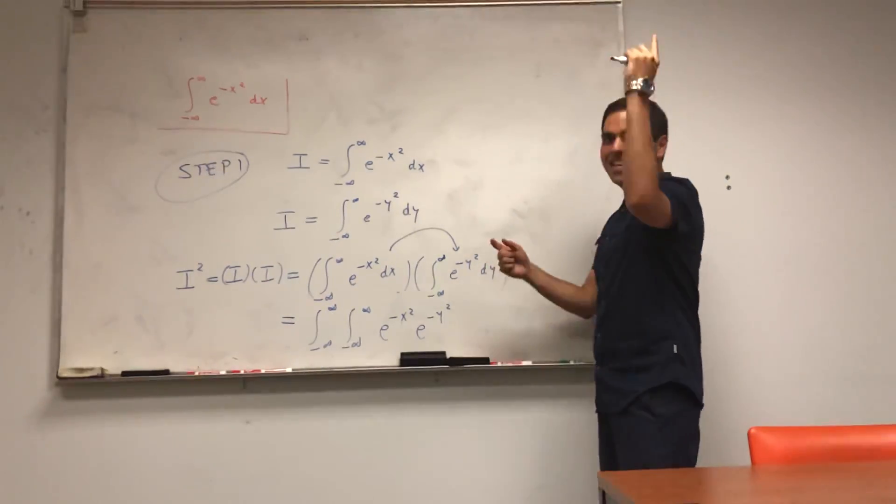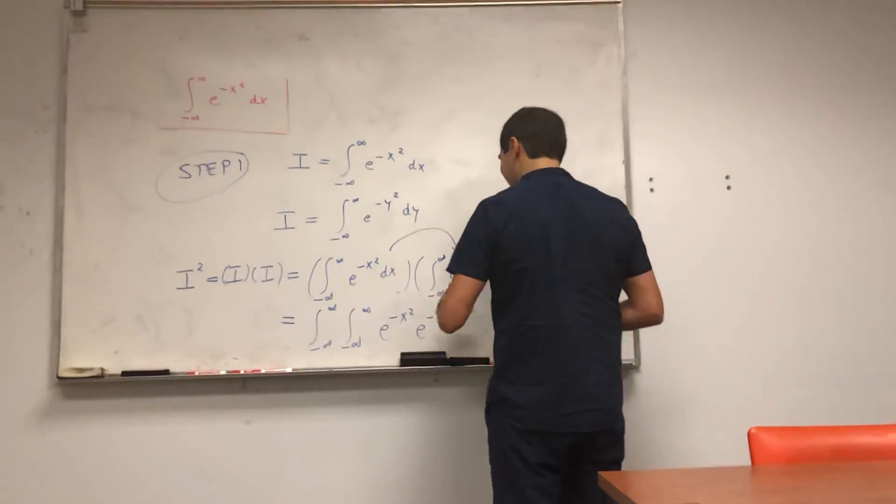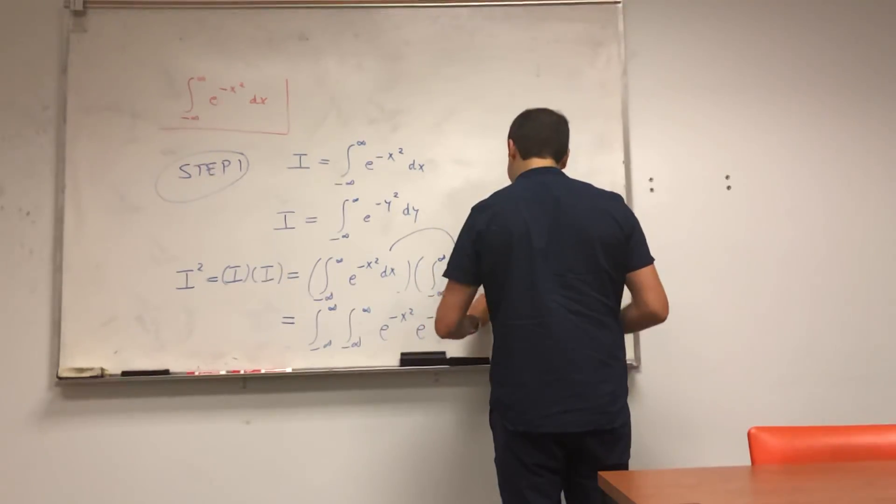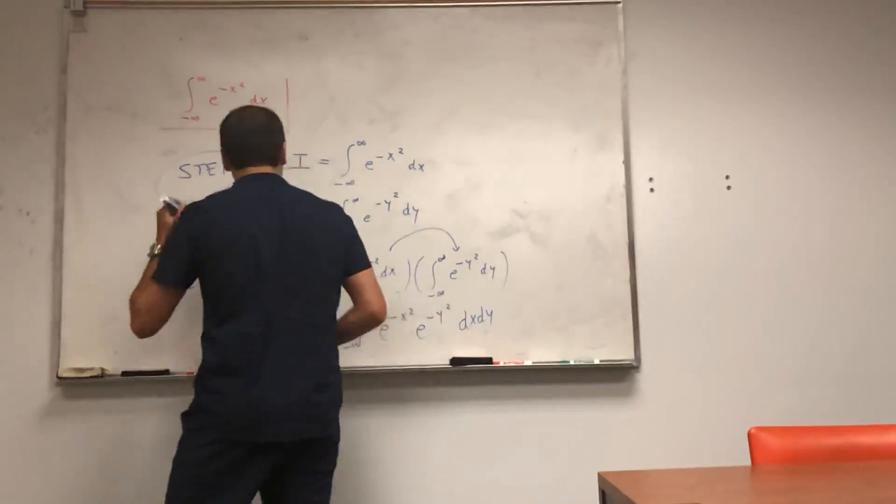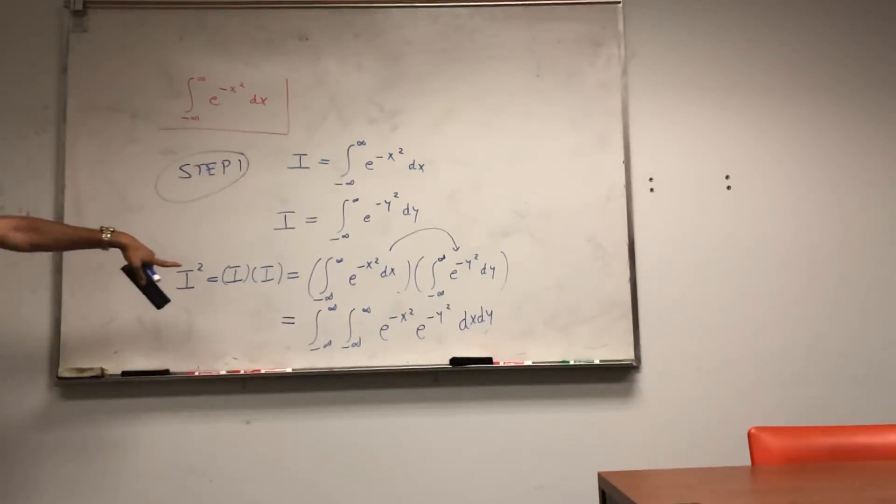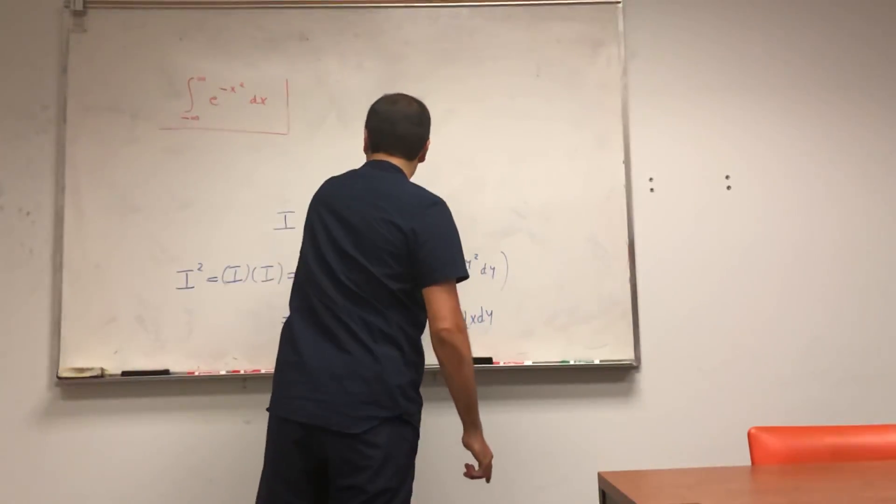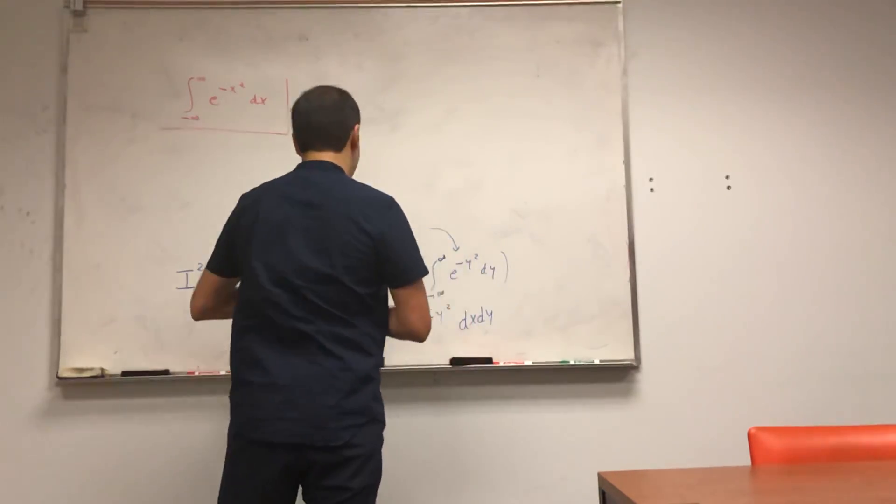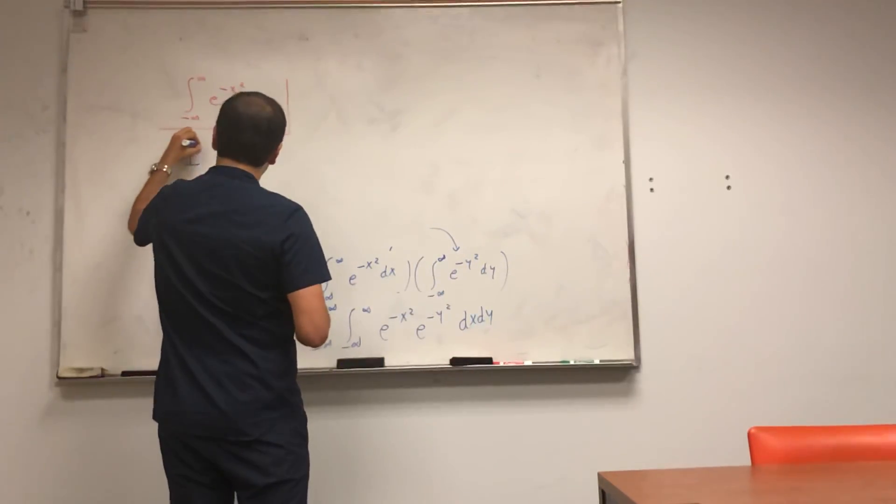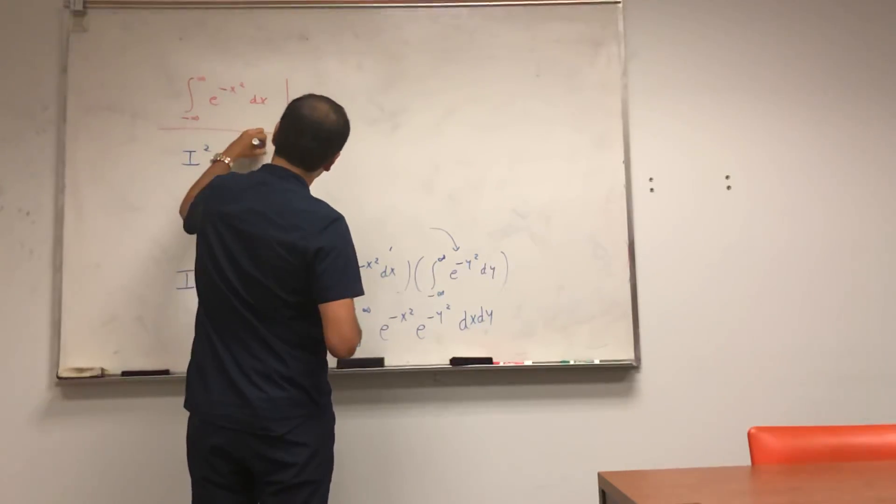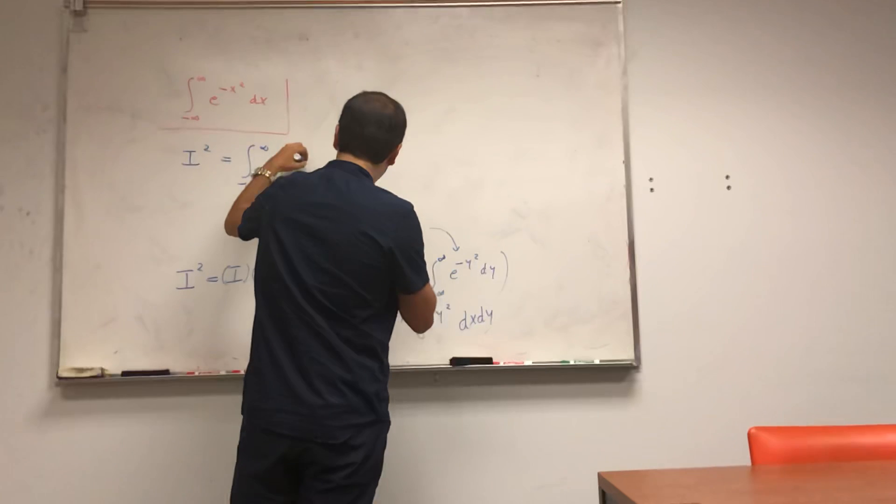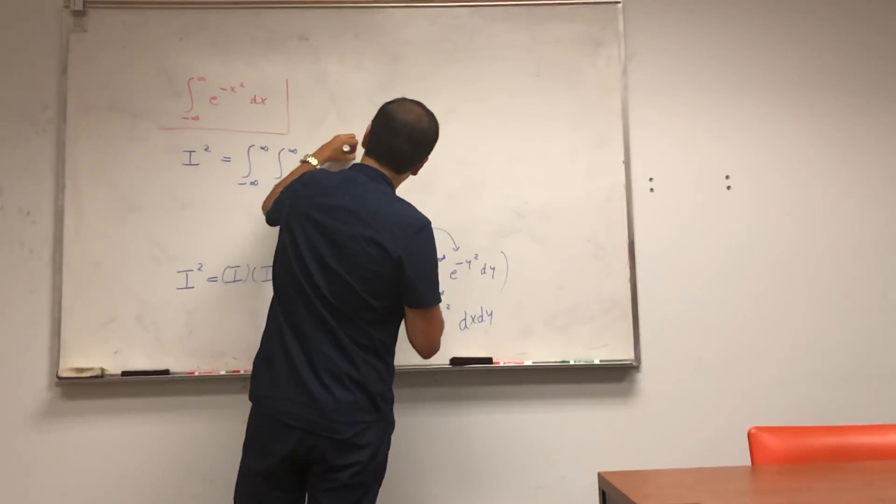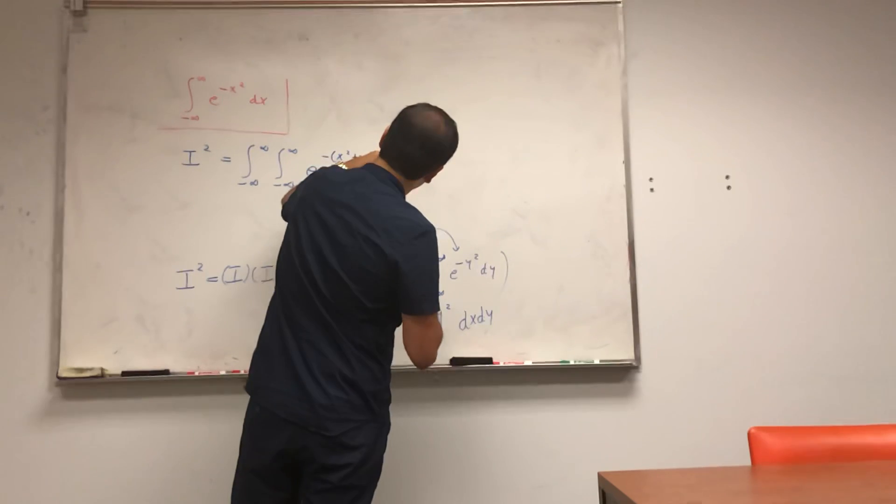And this integral then just turns out to be the integral from -∞ to ∞, integral from -∞ to ∞ of e^(-x²)·e^(-y²), technically dy dx, but because of our friend Fubini, we can interchange those and get dx dy. It's me, Fubini! So I can't stop saying that. And then it turns out this integral simplifies quite nicely, because we get I² equals the integral from -∞ to ∞, integral from -∞ to ∞ of e^(-(x²+y²))dx dy.